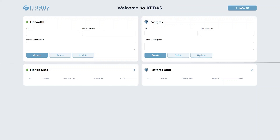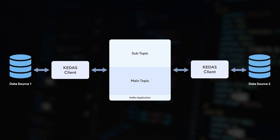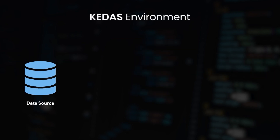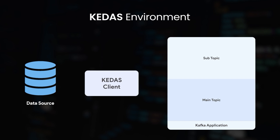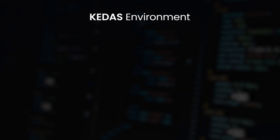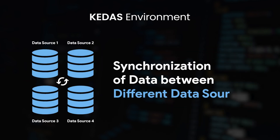Now let's see what this actually means inside the Kafka KEDAS environment. The KEDAS environment consists of three major components: data sources, the KEDAS client, and the Kafka application. Together, this solution enables the synchronization of data between different types of data sources in a seamless manner.